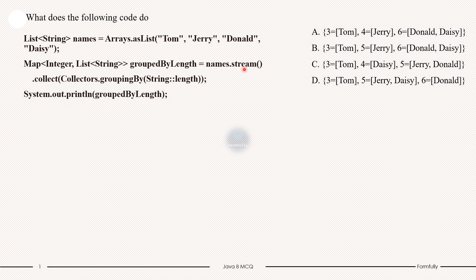Then in next steps, in second step we convert the list into a stream using stream method. This allows us to process the elements in a functional way. Then in third step, here we use the Collectors.groupingBy method to group the elements, that is names, based on the length of each string.